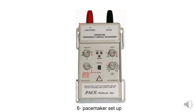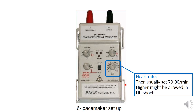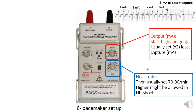You may have different pacemaker models in your hospital, but we deal with the parameters rather than the specific device shape. First, setup of heart rate: usually set above the patient's native heart rate, around 70 to 80 beats per minute or higher, especially in situations where heart rate is important for cardiac output, such as in shock or heart failure. Then we set the output — the electrical current delivered by the pacemaker to induce depolarization of the myocardium.